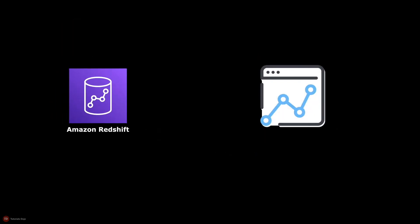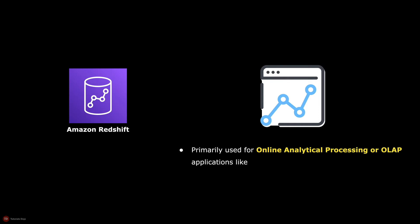Amazon Redshift is also a relational database like Amazon RDS or Aurora. The main difference is its primary usage — Redshift is mainly used for online analytical processing, or OLAP, applications like data reporting and analytics.